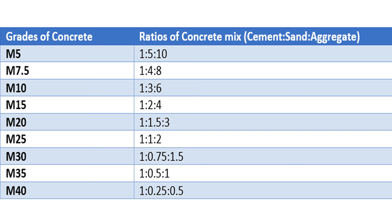For M30 grade of concrete, the ratio should be 1:0.75:1.5. For M35 grade of concrete, the ratio should be 1:0.5:1. For M40 grade of concrete, the ratio should be 1:0.25:0.5.